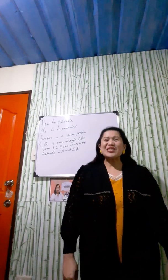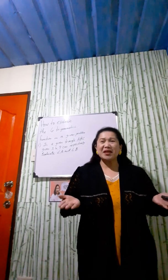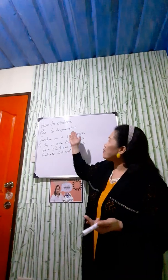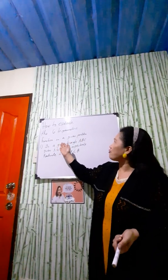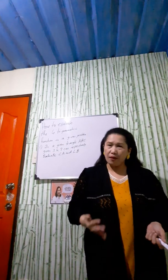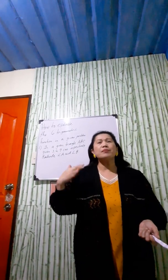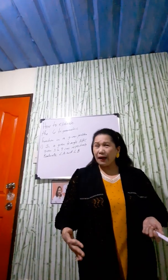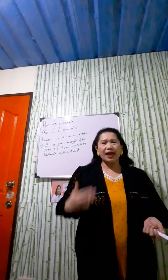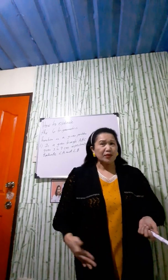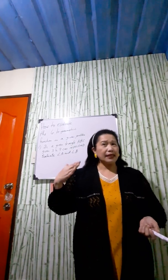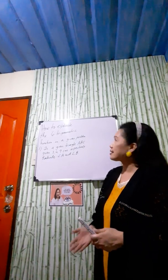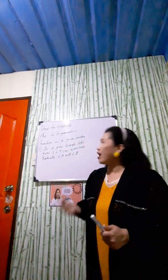Good evening guys, this is Teacher SP and welcome to my channel. Today I will be teaching you how to evaluate the six trigonometric functions in a given problem. This is a continuation of our previous lesson where I discussed SOH-CAH-TOA, and we are going to get the trigonometric functions using angle A and angle B in a right triangle.